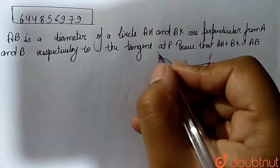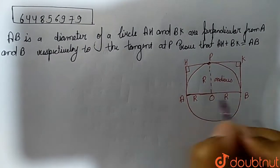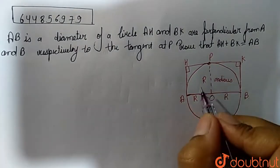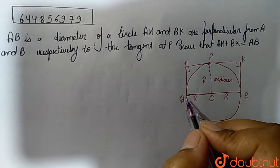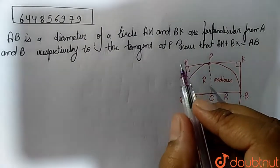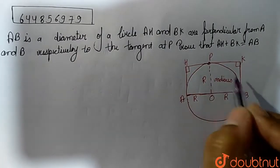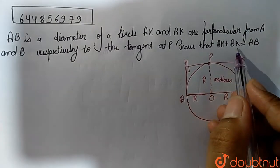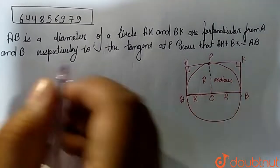The question here is: AB is a diameter of a circle. AH and BK are perpendiculars from point A and point B respectively to the tangent at point A and the tangent at point B. We have to prove that AH + BK is equal to AB.